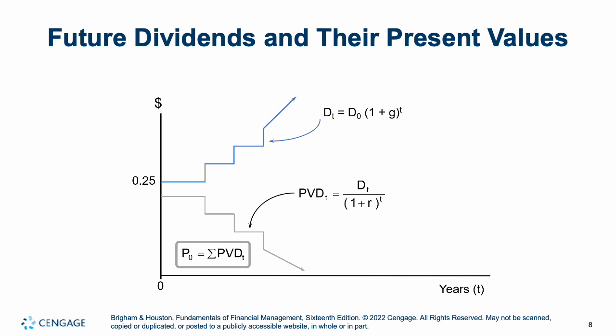Looking at future dividends and their present values — remember, the present value of something is less and less the further out you go. Dividends are going up (the blue line), but the present value of them is going down (the gray line) as time increases. Money you get far in the future is worth a lot less now than when you get it — time value of money. So the further we go out, the present value of those dividends is decreasing, even though the dividends themselves are going up.